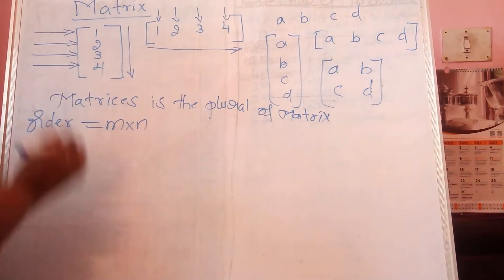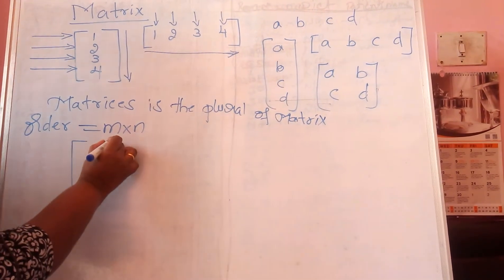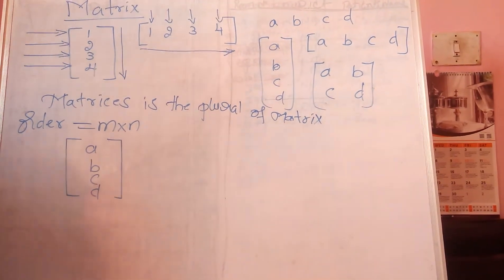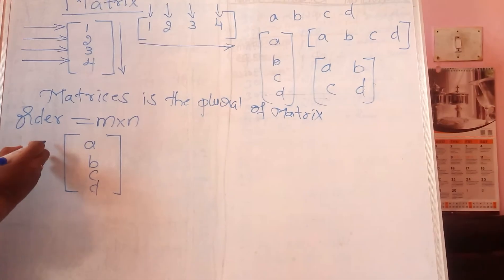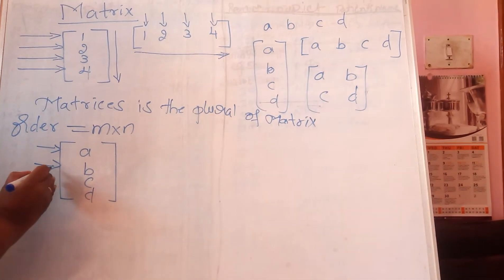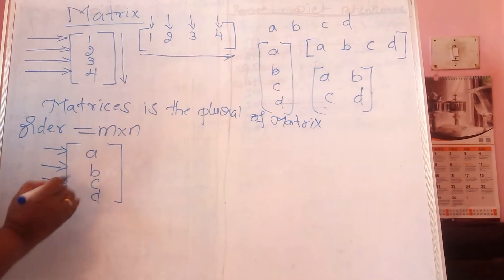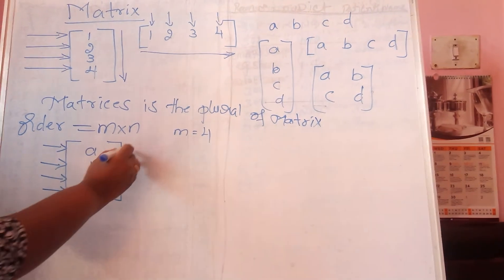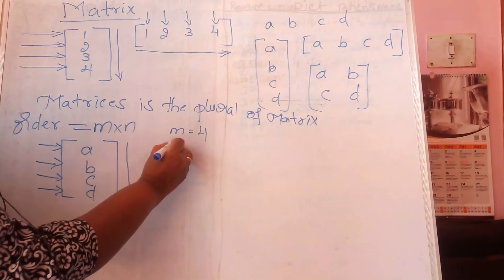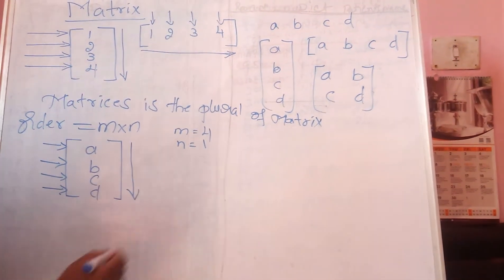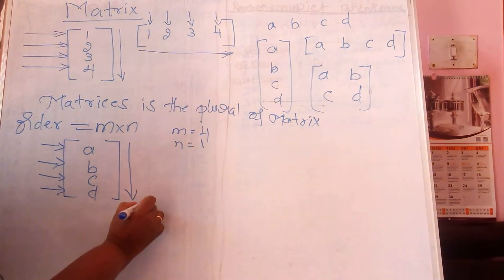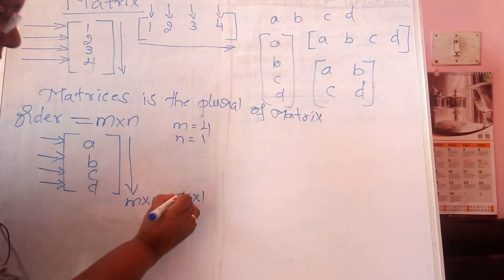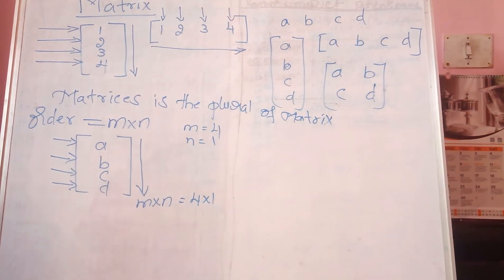For example, if I take this matrix A, B, C, D — here the number of rows is 1, 2, 3, 4, so M is 4. The column is only one column, so N is 1. So how do we write the order? The order will be written as M into N, which is nothing but 4 into 1. This we call the order of the matrix.